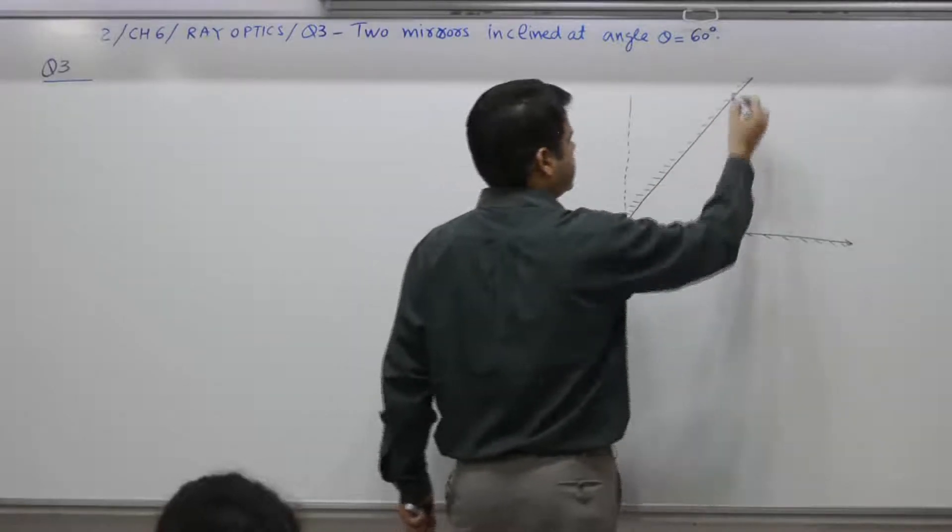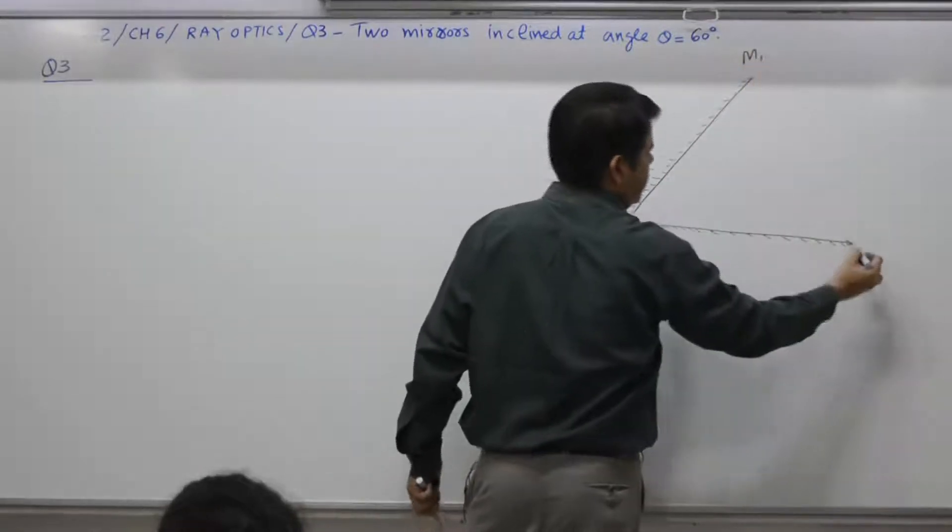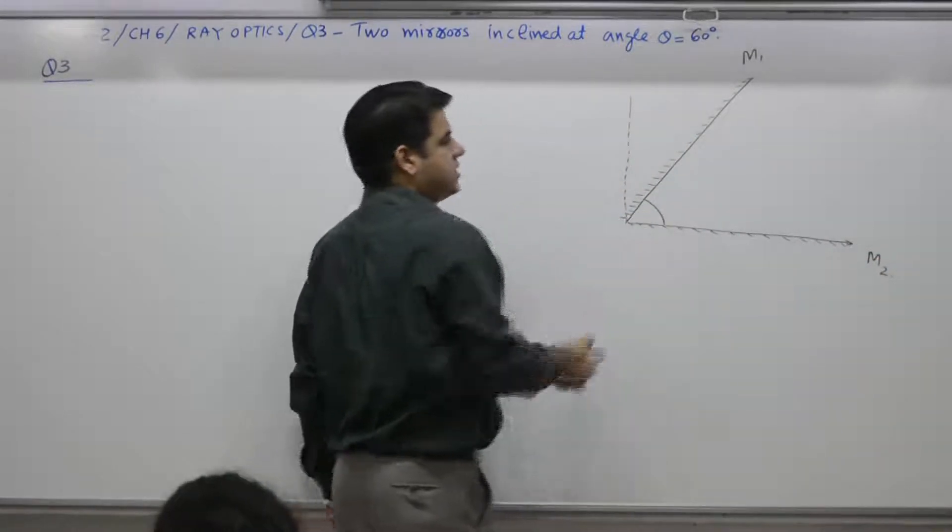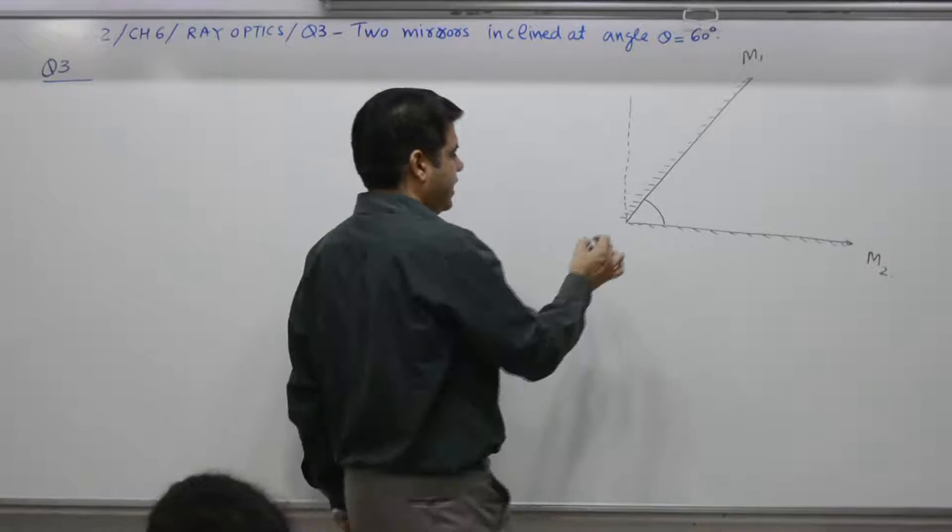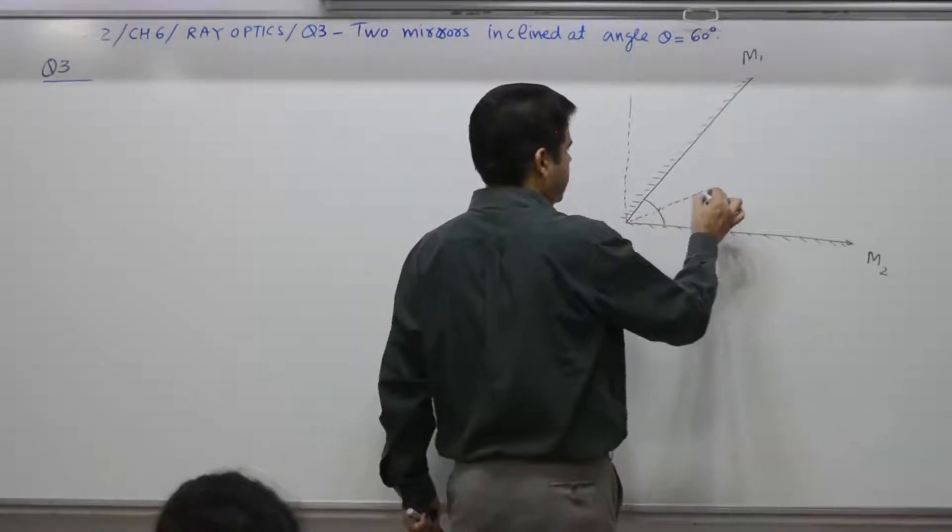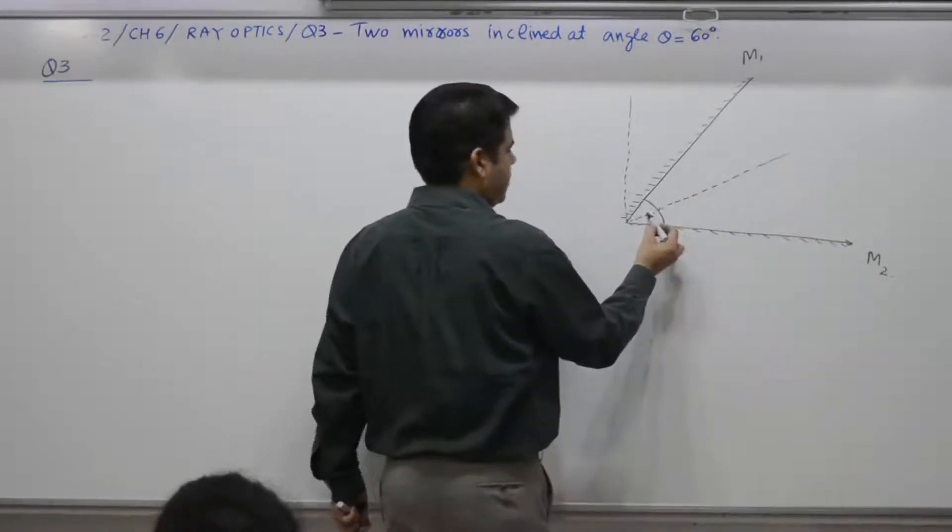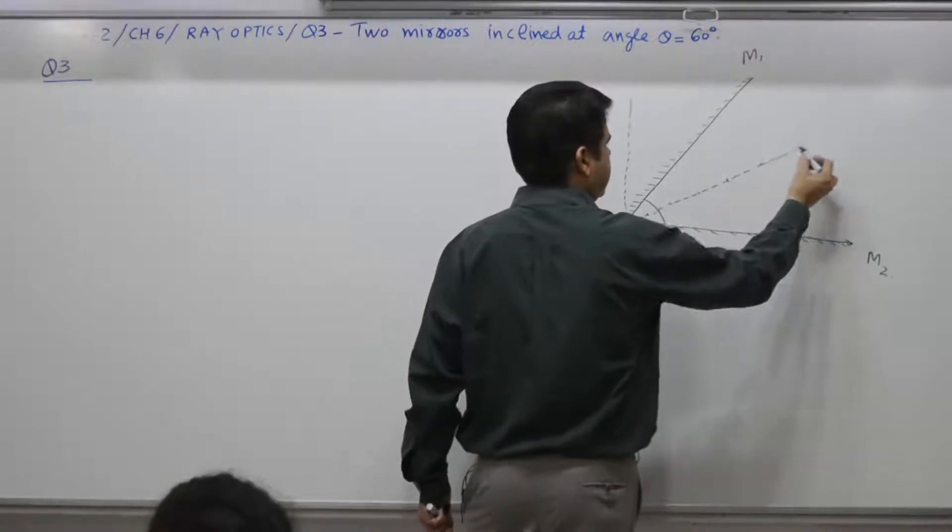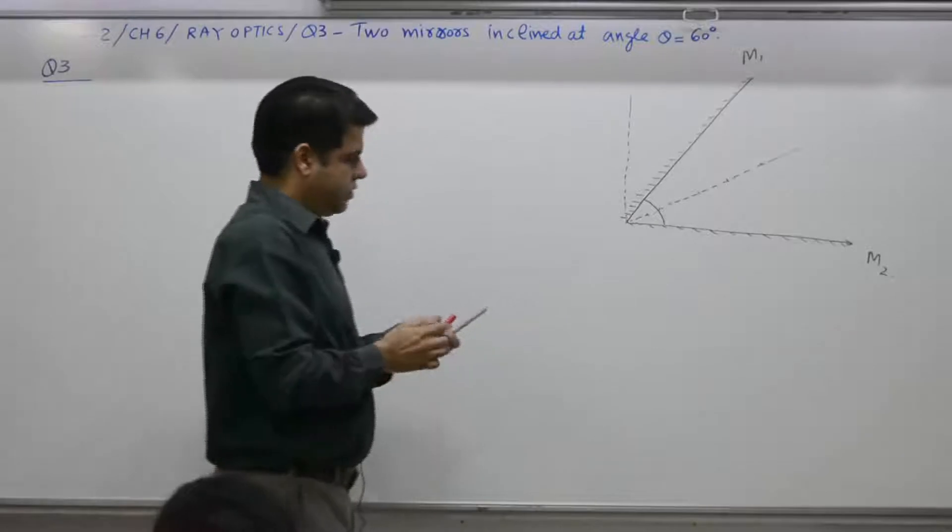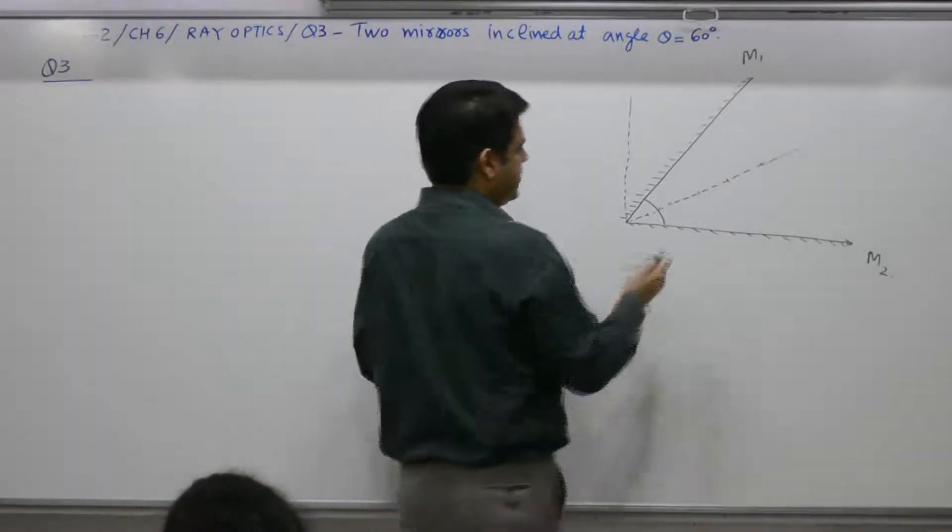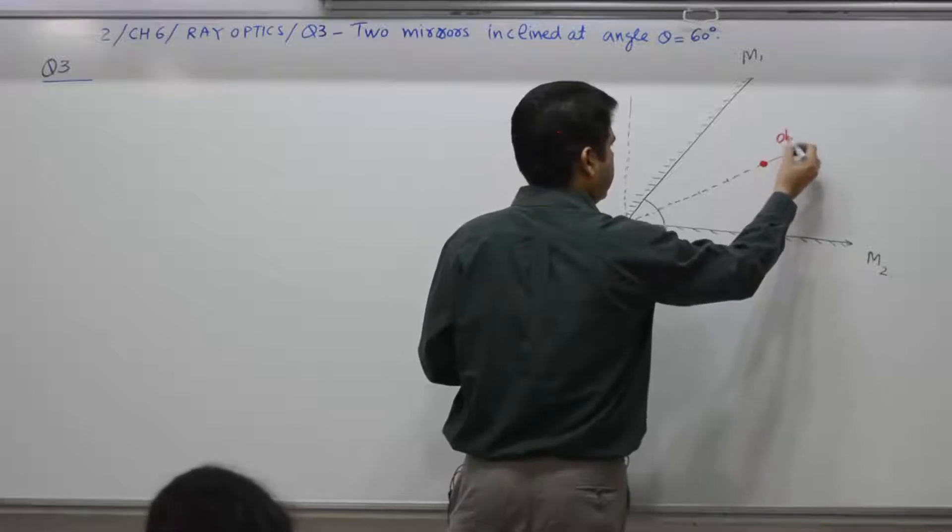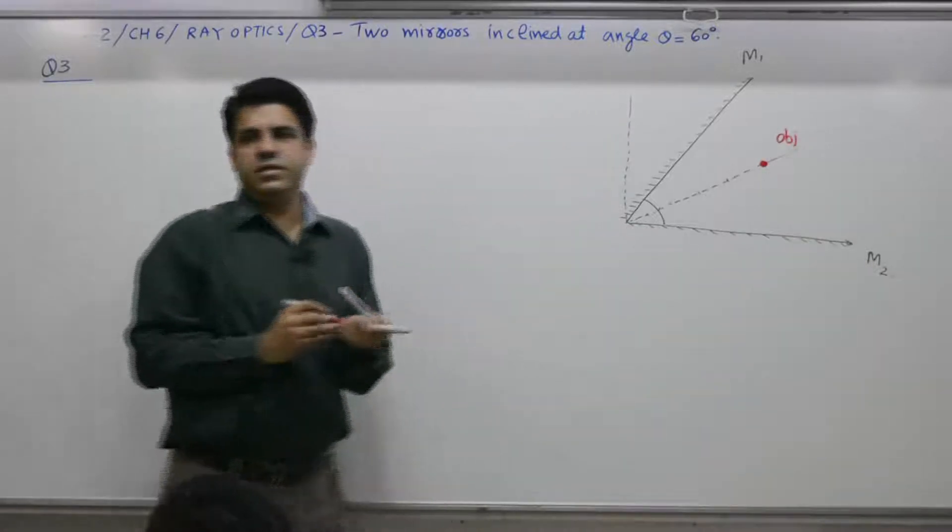There are two mirrors, M1 and M2, inclined to each other at what angle? 60 degrees. And again there is an object placed at what distance? Same: 1, 2, 3, 4, 5. There is an object placed at 5 centimeters. Draw it. Free hand drawing.